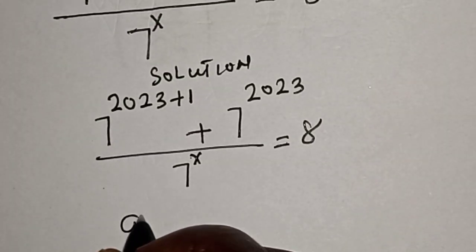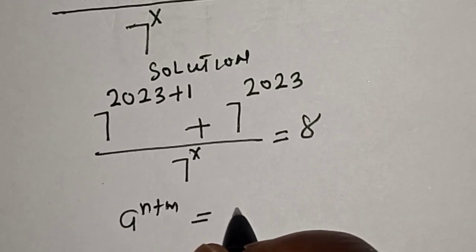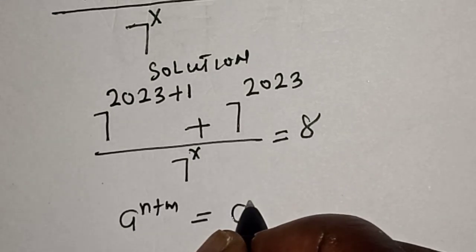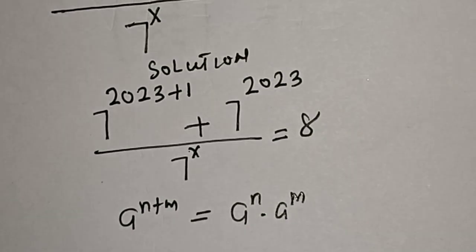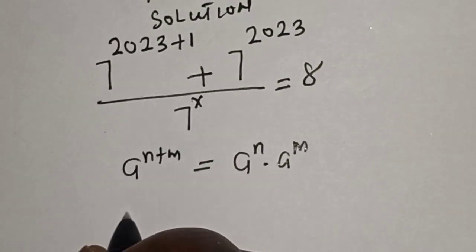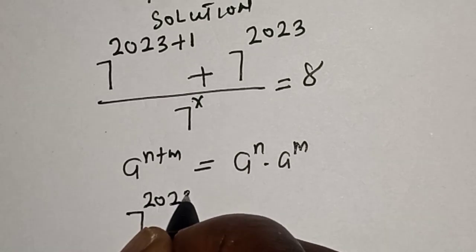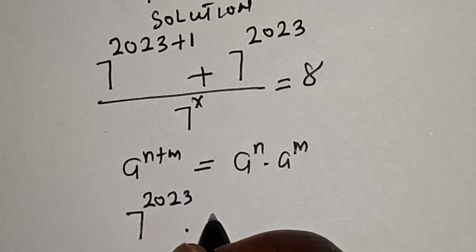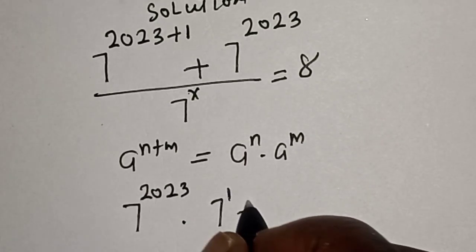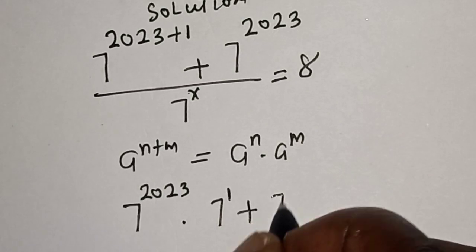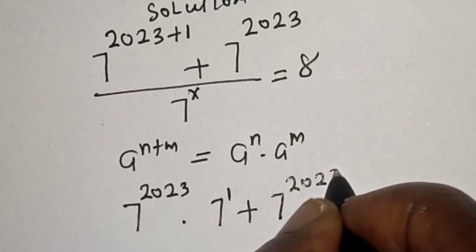Now remember that if you have a raised to power n plus m, this is equal to a raised to power n multiplied by a raised to power m. So this is 7 raised to power 2023 multiplied by 7 raised to power 1, plus 7 raised to power 2023.